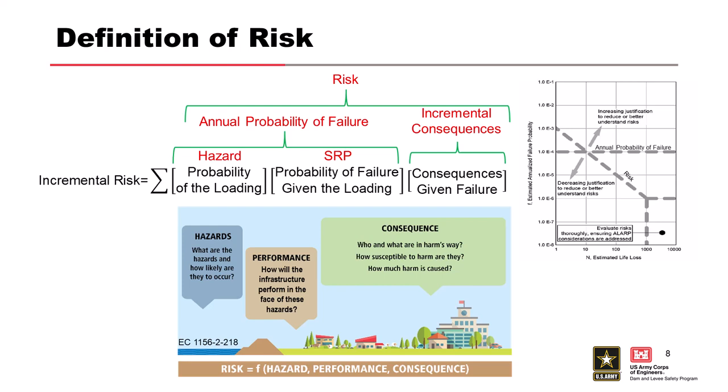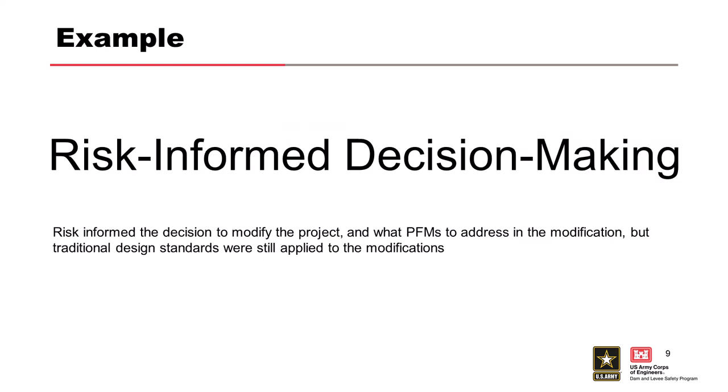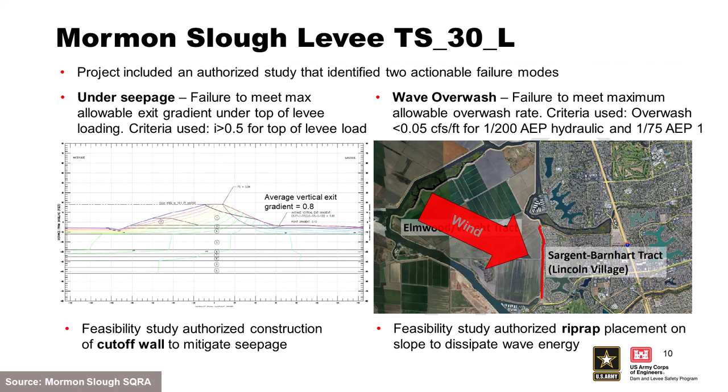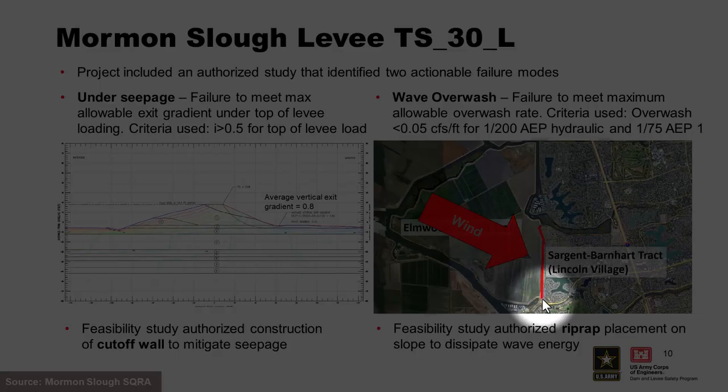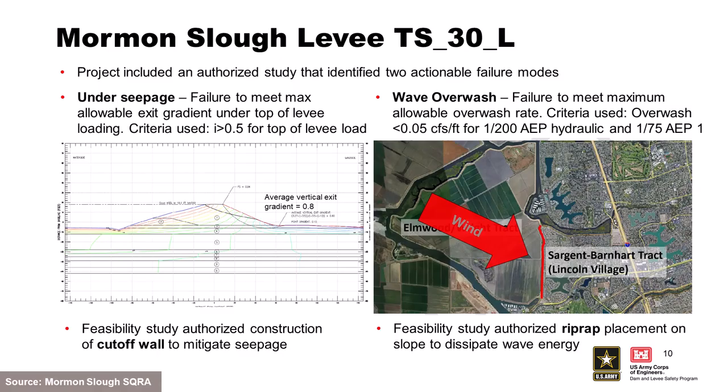Now jumping into case studies from work done in the Jacksonville District. The first project I'll call risk-informed decision making. Risk was estimated to be high; a risk-informed decision was made to take action on some failure modes but not others, and then traditional standards-based design takes over. This is Mormon Slough Levee, segment TS-30L, shown in red — located in Stockton, California.